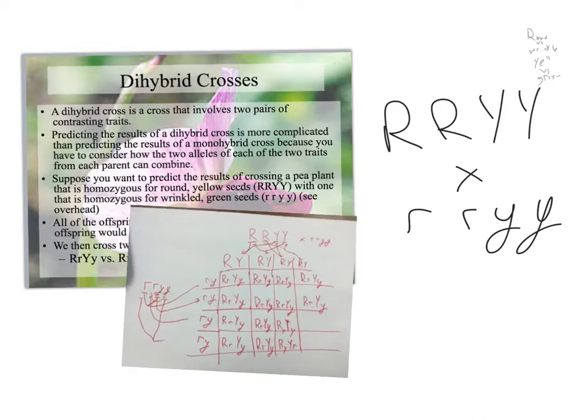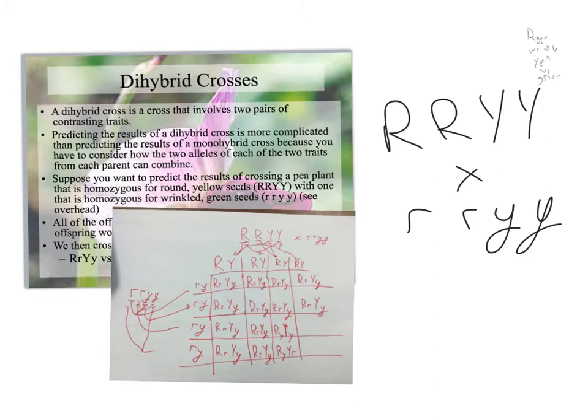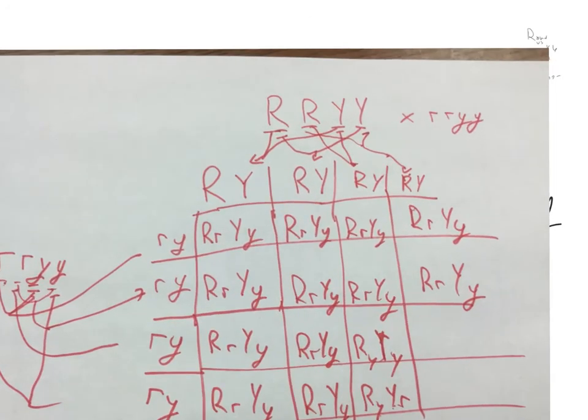All right, so you can see here, I've taken these charts, and all I've done is taken the different possible combinations. So this R could go with that, and they combined them. And I could complete this if I wanted to and put, you know, here that R and that R and that Y and that Y. Same thing down here.